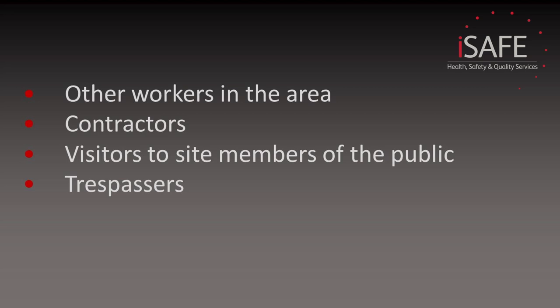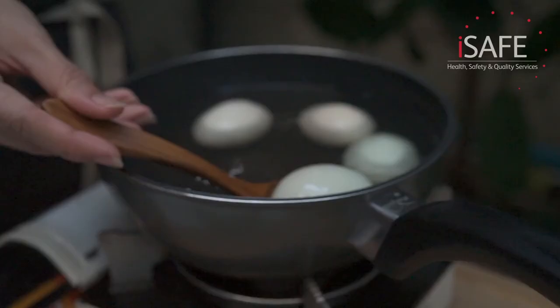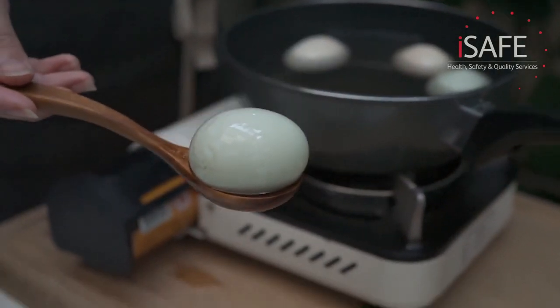Within your list of people you will have the person carrying out the work, however there will also be other people who may be affected. These could be other workers in the area, contractors, visitors to site, or members of the public or even trespassers who shouldn't really be there. Also think about the process the people will be working to and how the task will be carried out. Next, think about what equipment will be required for the task. Even a task as mundane as boiling an egg requires a pan, a hob, some sort of egg retrieval tool and a timer. Each piece of equipment will have its own set of hazards, so it's important that we identify all of the equipment required for the task.